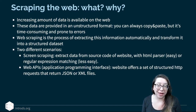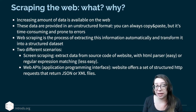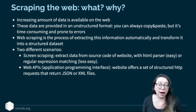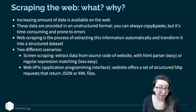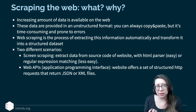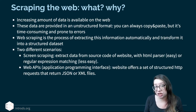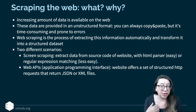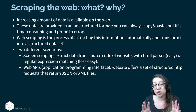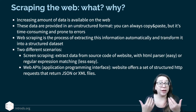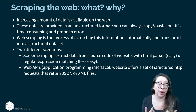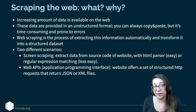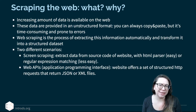Web APIs — API standing for Application Programming Interface — is when a website offers a set of structured HTTP requests that return files in the format of generally JSON or XML. In this case, you're not necessarily looking at the source code of the data, but you can actually make these requests to the website, which will then make the data available to you.